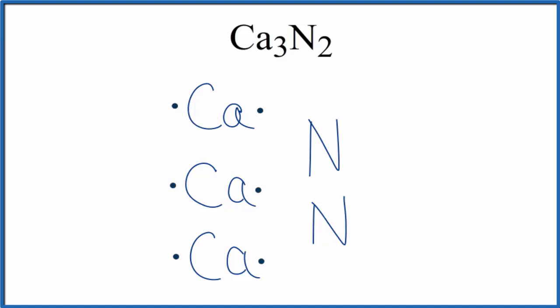Nitrogen, that's in group 15, sometimes called 5A. So we'll give each nitrogen five valence electrons.